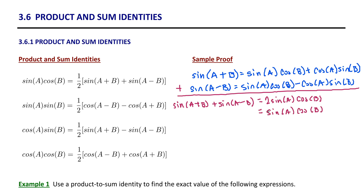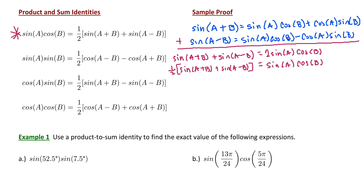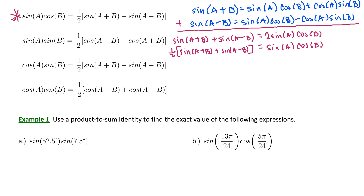Dividing the right side by two cancels the coefficient, and on the left side we write it as one half times the sum: sine of a plus b plus sine of a minus b. As mentioned before, it's not necessary that you memorize these four identities — memorize all the other identities in this chapter — but do know how to use them.